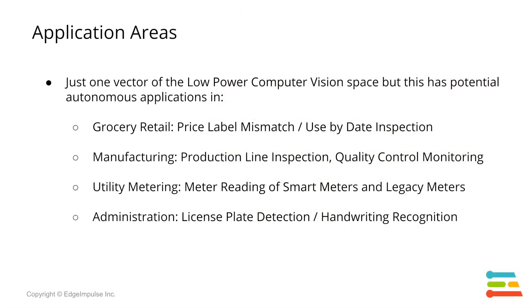Now let's take a closer look. Digit recognition is just one vector of the low-power computer vision space, but has potential autonomous applications in grocery retail for price label mismatch and data inspection, manufacturing for product line inspection and quality control monitoring, utility metering for meter reading of smart meters and legacy meters, as well as administration for license plate detection and handwriting recognition.